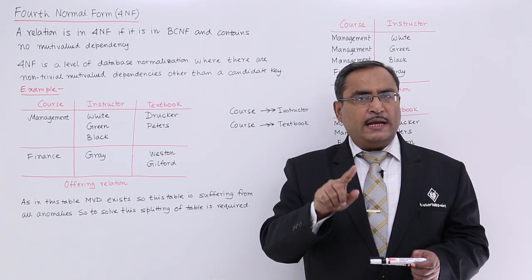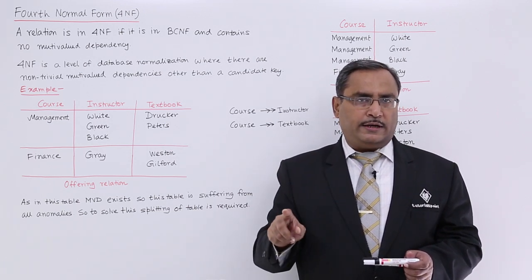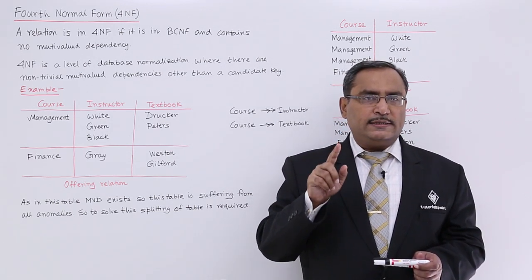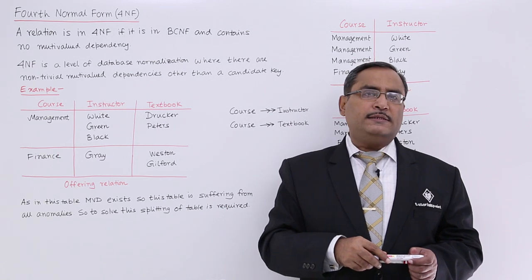But attribute B and C, they are not related. If it is so, we can say that multivalued dependency is existing.